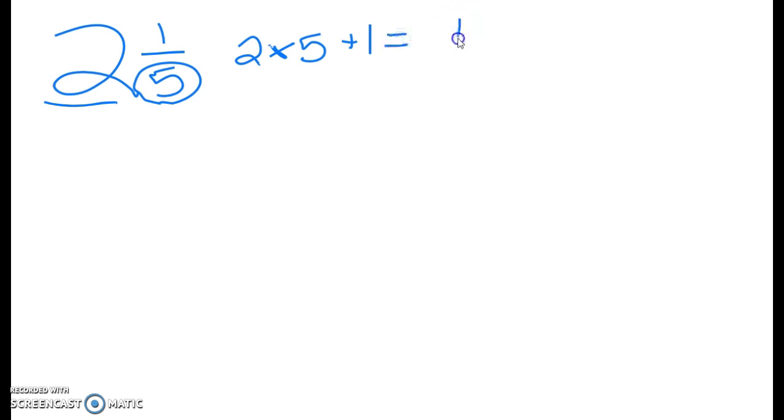This is your new numerator, and this is all over your denominator, which does not change. So 2 and 1/5, as an improper fraction, is 11/5.